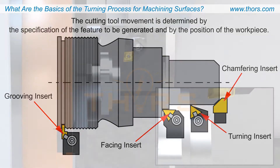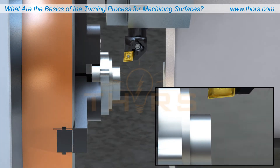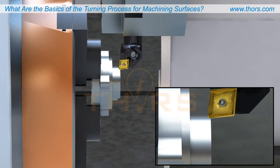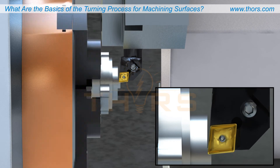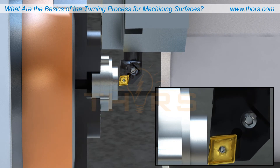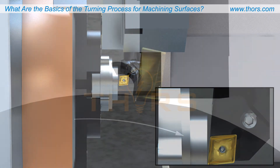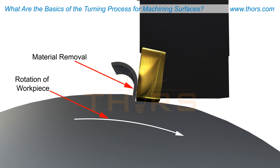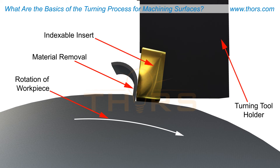One example of a turning process is facing. During the facing process, the tool moves perpendicularly to the workpiece rotational axis. As in all turning processes, material removal is accomplished due to the relative motion between the workpiece and the cutting tool.